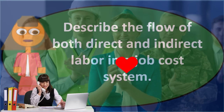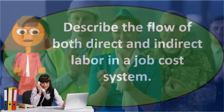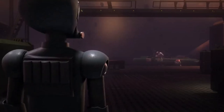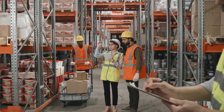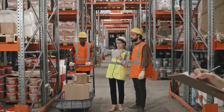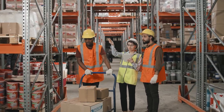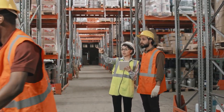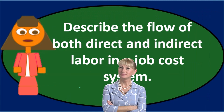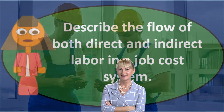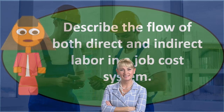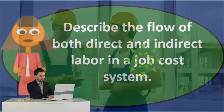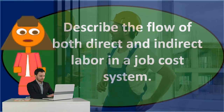Because we can't assign indirect labor to a specific job, it goes into overhead. We know it needs to be in inventory somewhere — we just don't know which job it belongs to. Examples include supervisor salaries or maintenance salaries, where the person isn't working on one particular job but possibly overseeing all jobs. We can't determine exactly which job they were supporting.